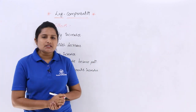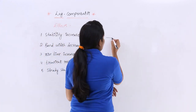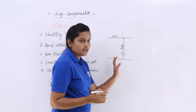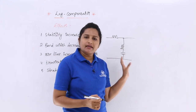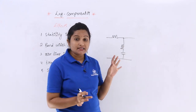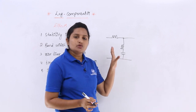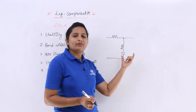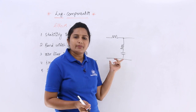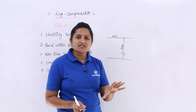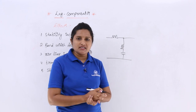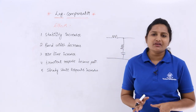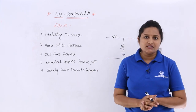Coming to the network — the lag compensator network is in the form of a low-pass network, so it can effectively eliminate high-frequency noise. Whenever high-frequency noise is present, it can be eliminated by this low-pass type of compensator network, which attenuates high frequencies at the input.